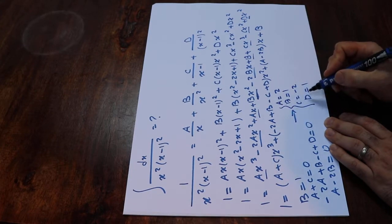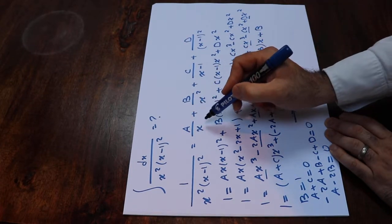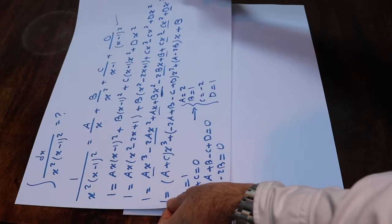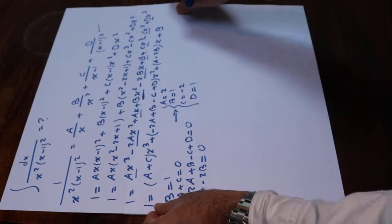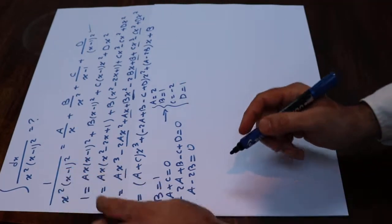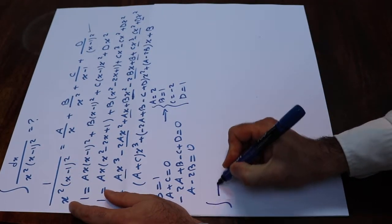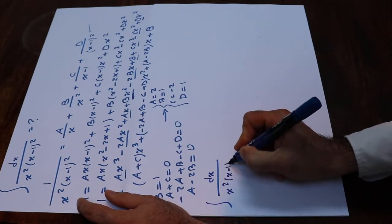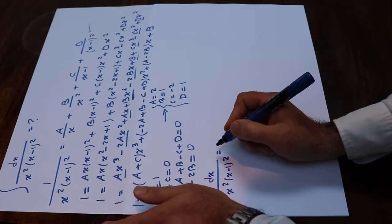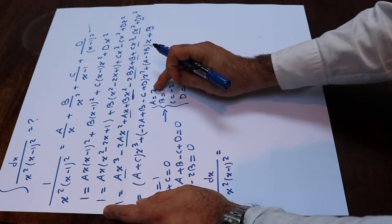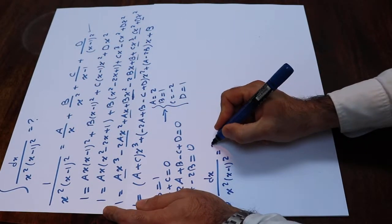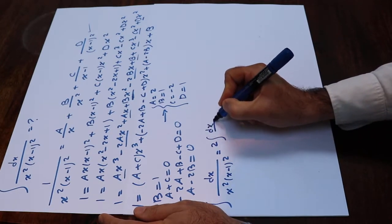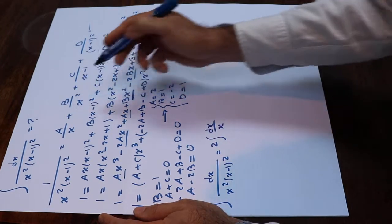Now you have these parameters and you substitute them into the equation. The integral of dx divided by x² times (x minus 1)² equals: 2 times the integral of dx over x, plus the integral of dx over x²,